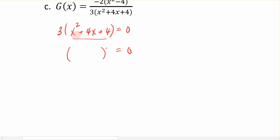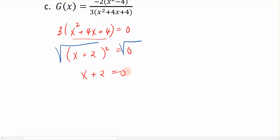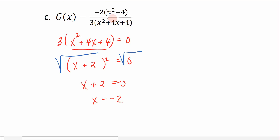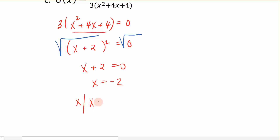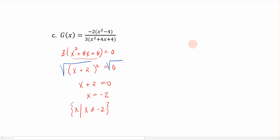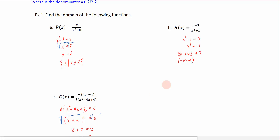The trinomial x² + 4x + 4 is a perfect square trinomial — the first term and last term are both perfect squares. So it factors as (x + 2)². Setting (x + 2)² = 0 and taking the square root of both sides gives x + 2 = 0, and subtracting 2 from both sides gives x = −2. So if we plug −2 into the rational function, it's the one number that causes the denominator to equal 0, so it's the value we throw out. The domain is: {x | x ≠ −2}. That's how we take the denominator, set it equal to 0, and figure out the domain of a rational function.